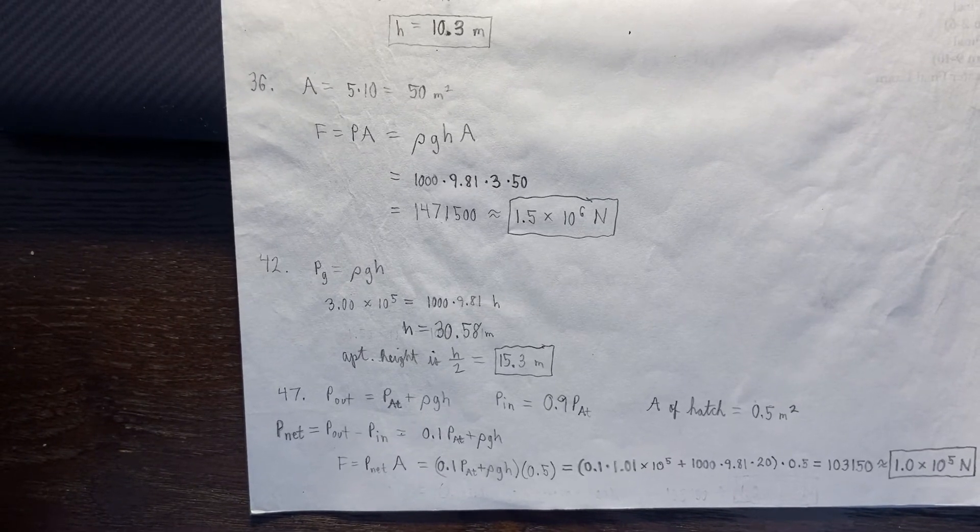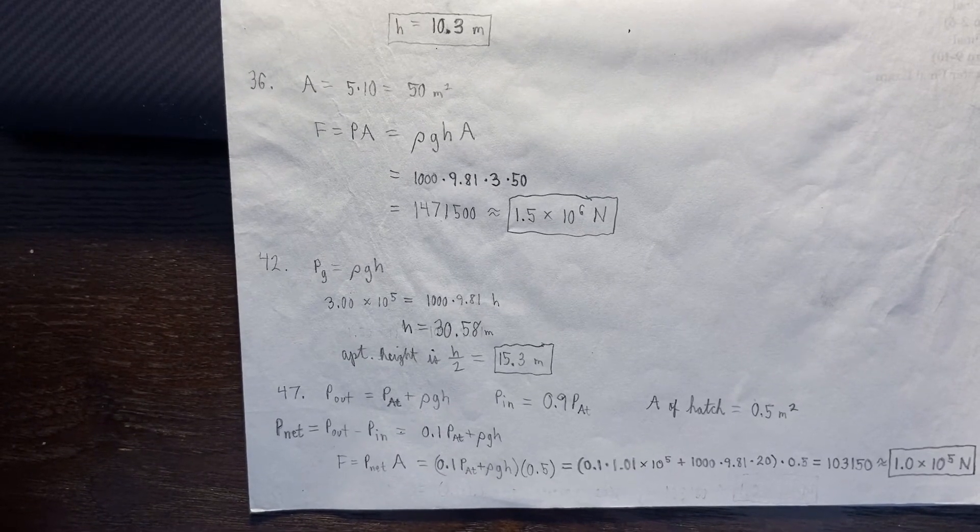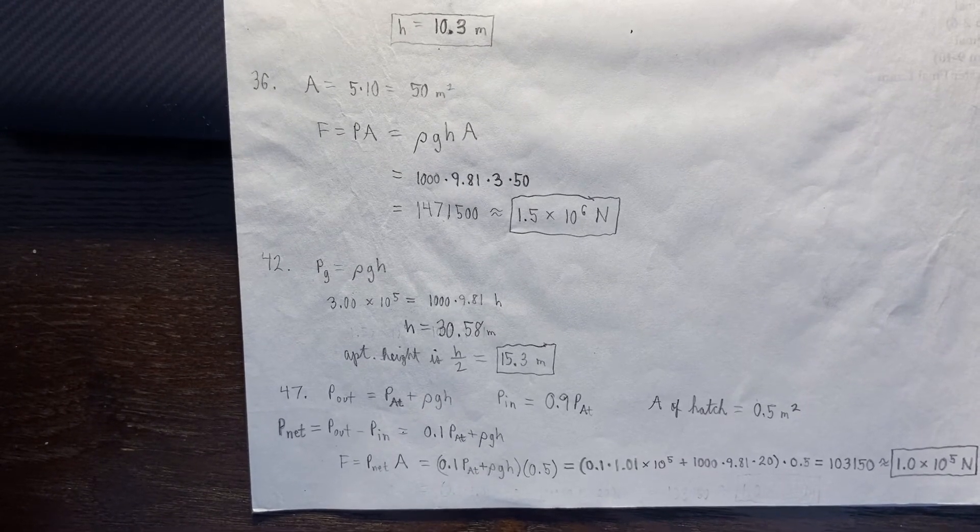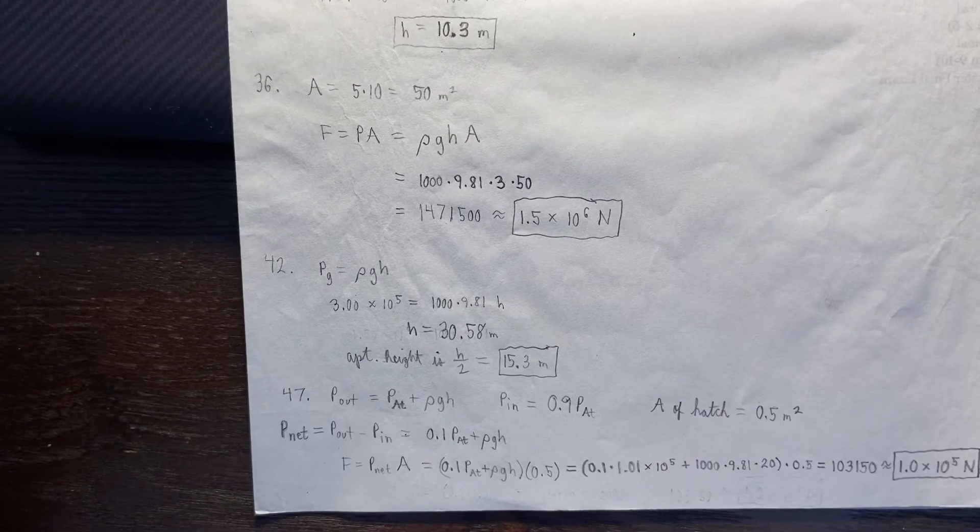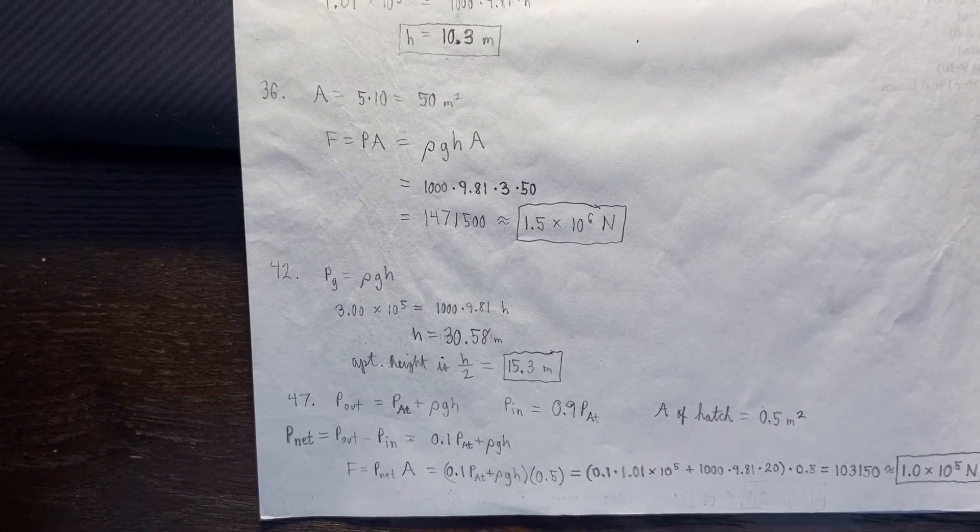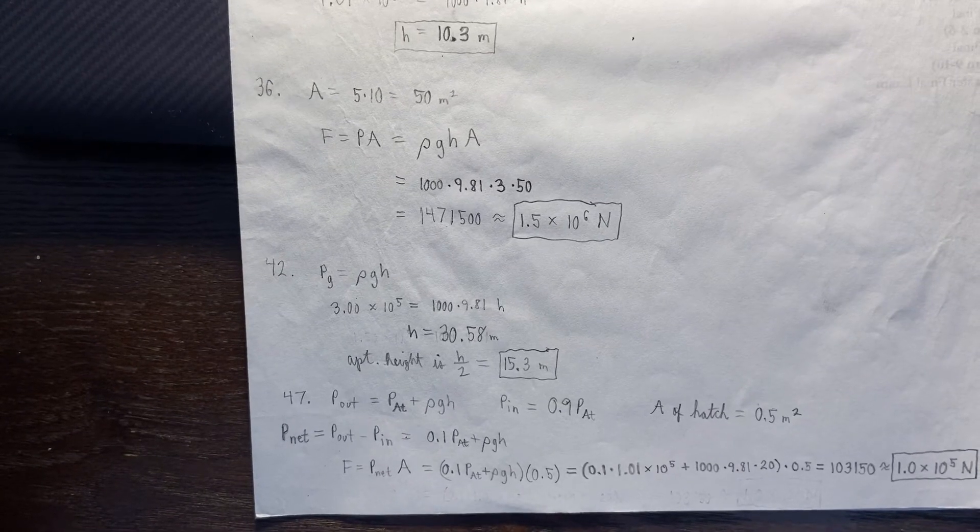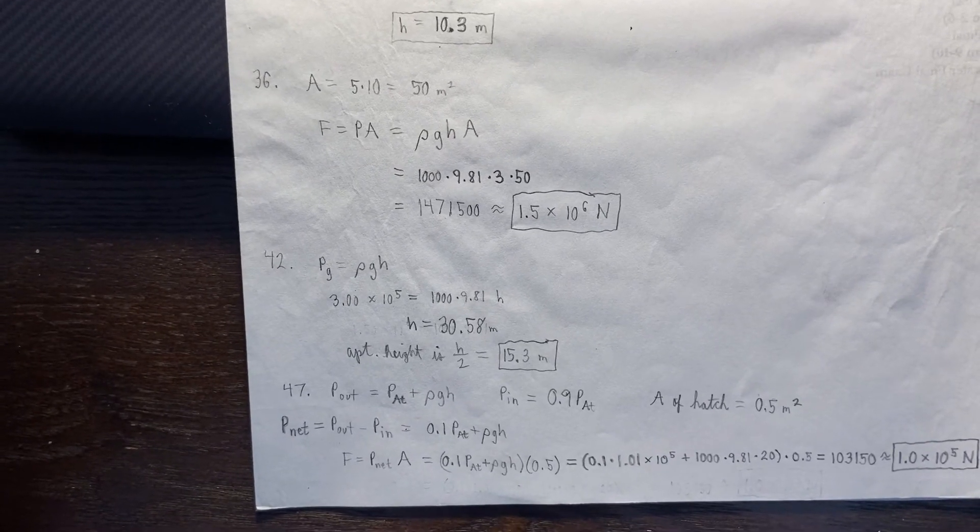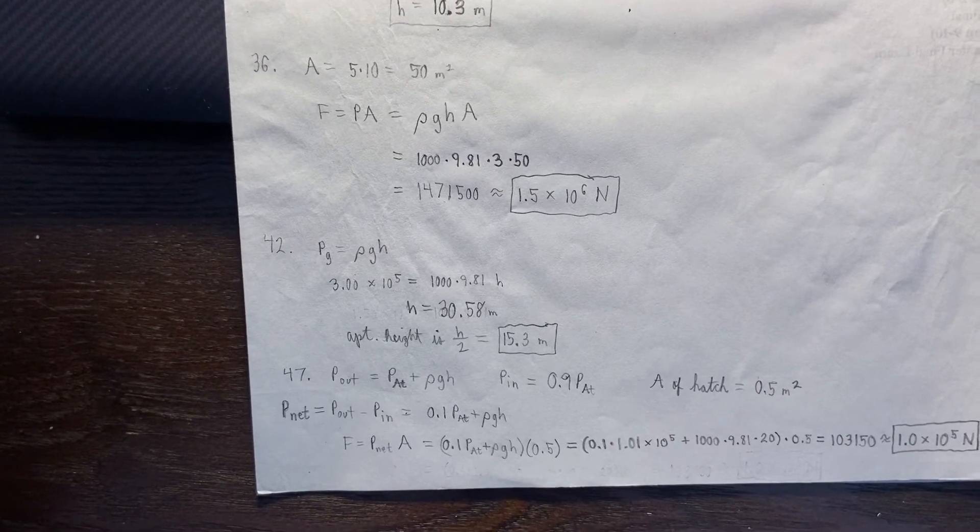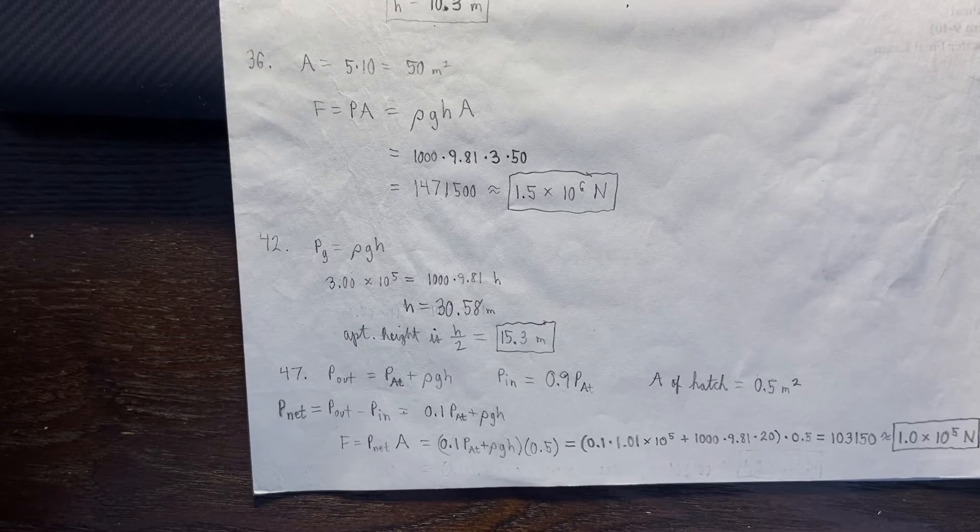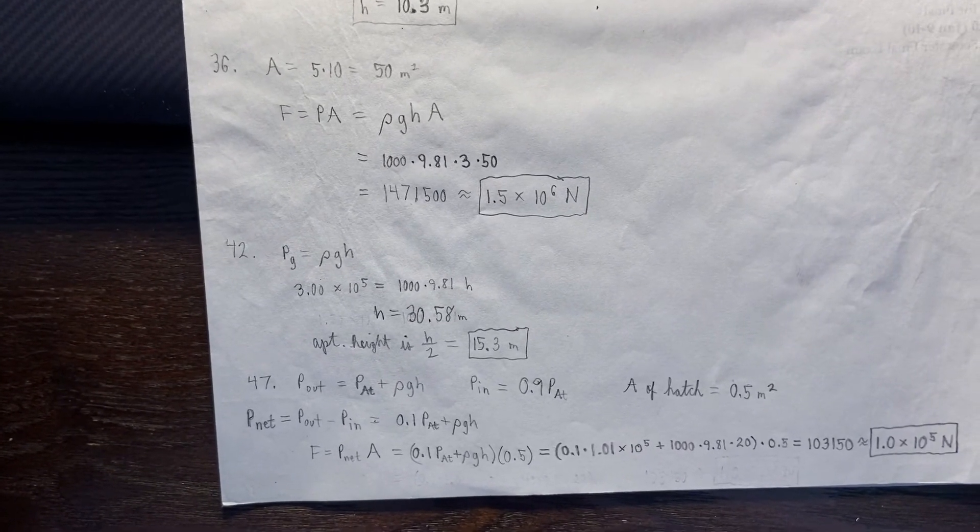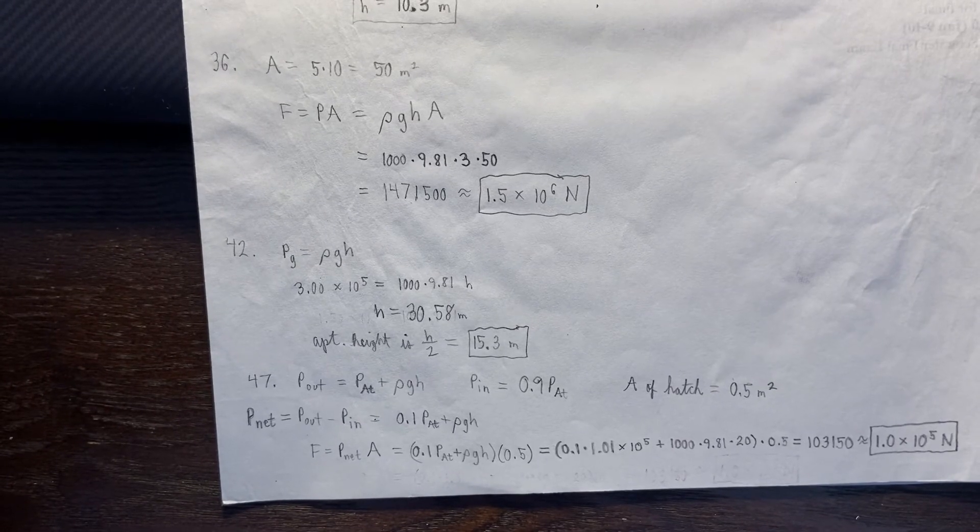My P net is going to be my external pressure, or outside pressure, minus my inside pressure. And if I do that, P at plus rho GH minus 0.9 P at, that's going to give me my 0.1 P at plus rho GH. And now, we use that as our P net expression. So, I can plug a lot of things in now and find that the total force is 1.0 times 10 to the 5th Newtons.